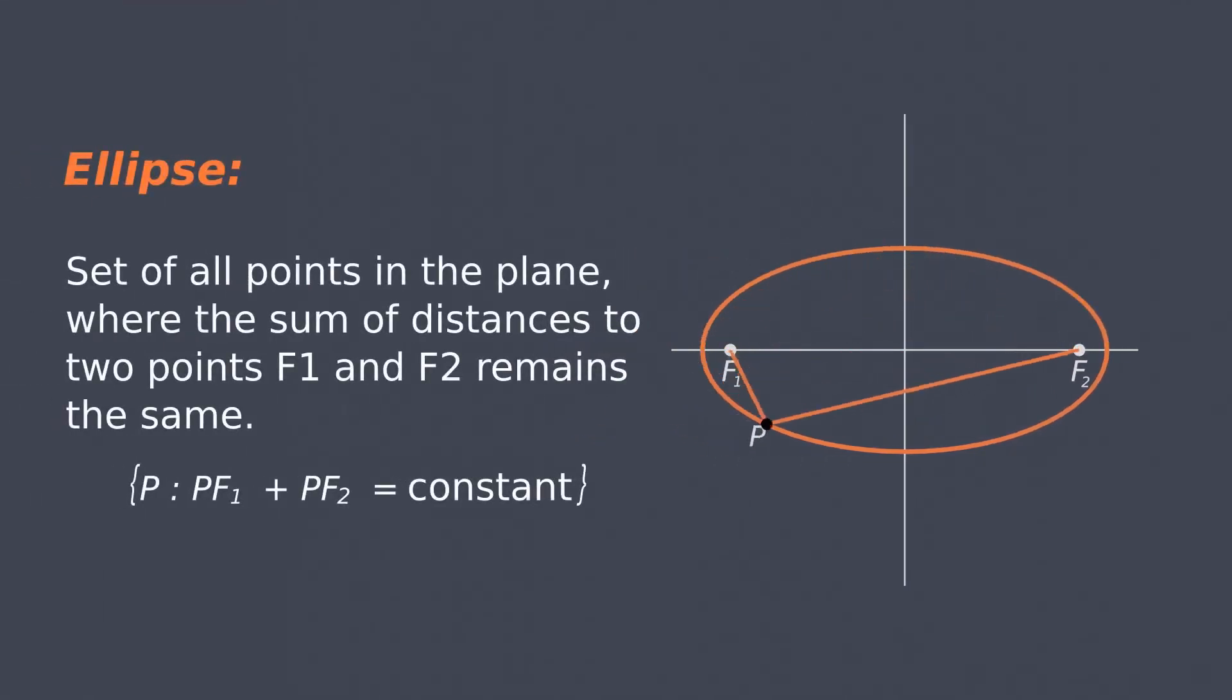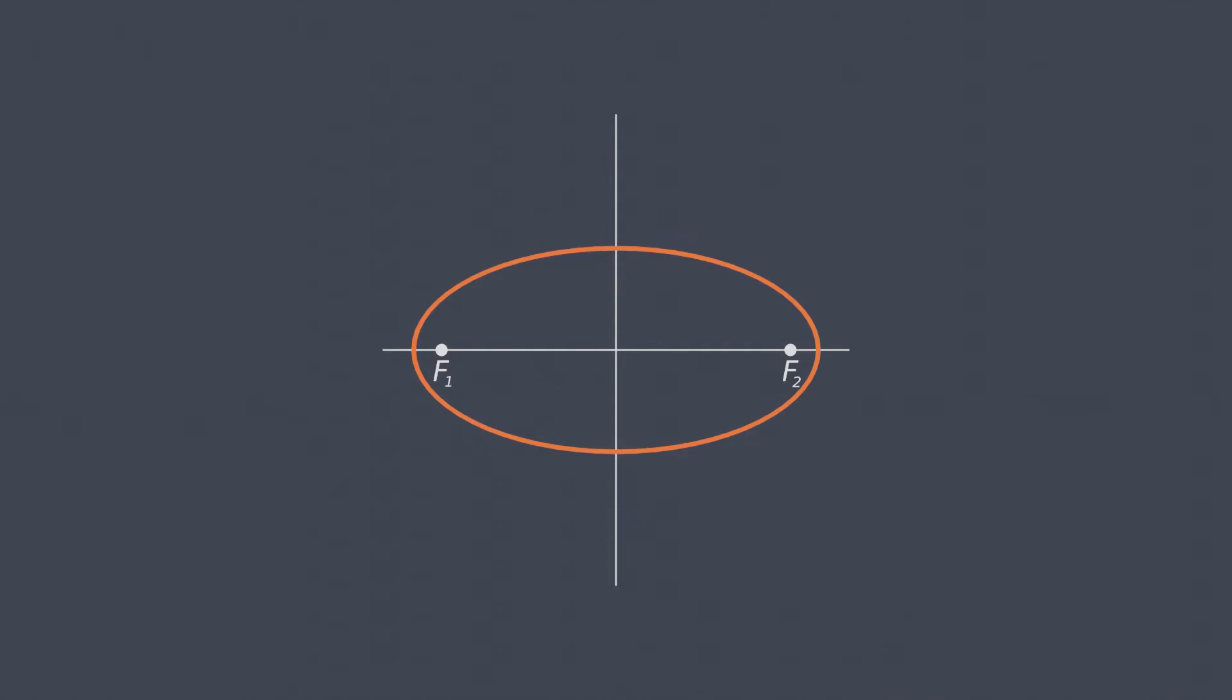Mathematically, an ellipse is the set of all points in the plane in which the sum of the distance to the foci remains the same.